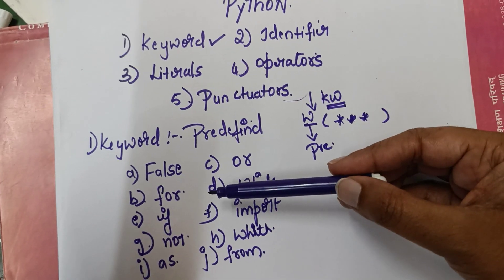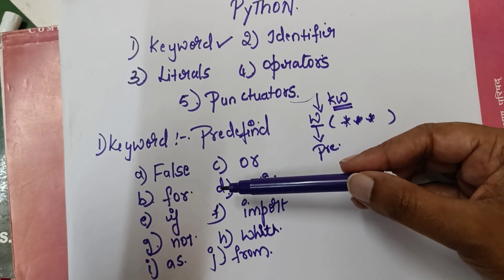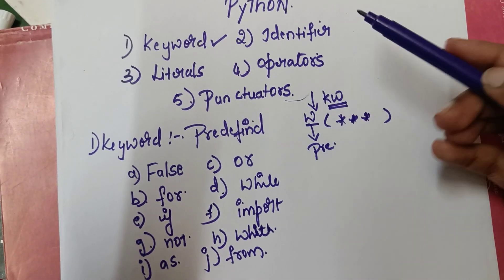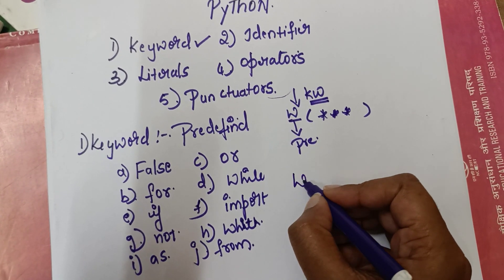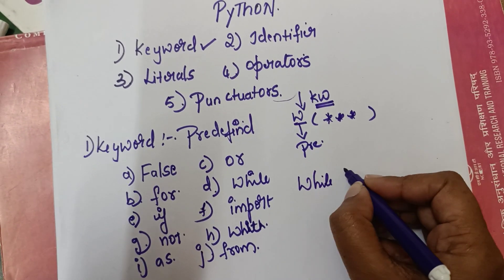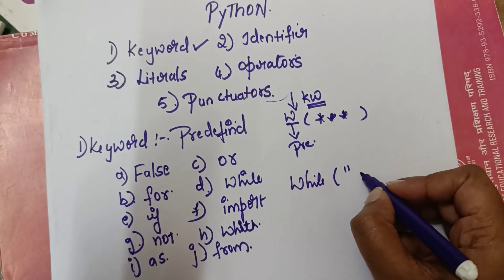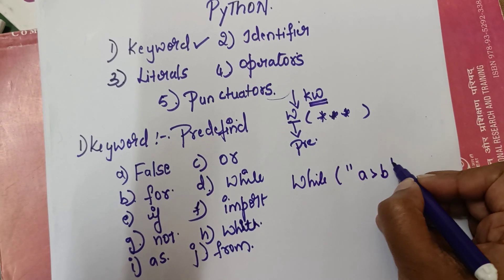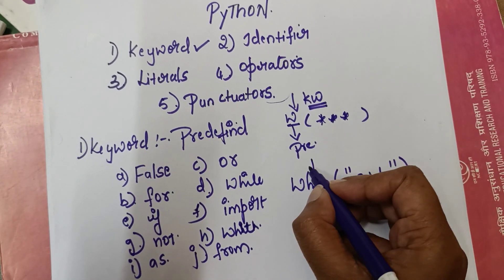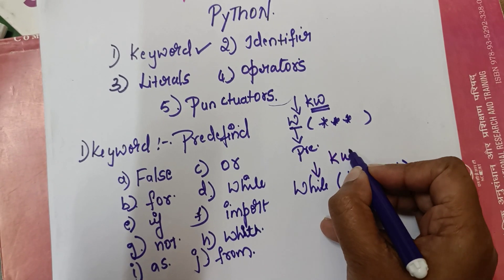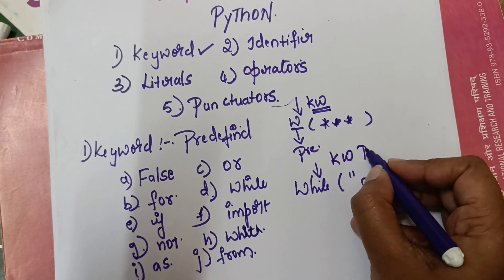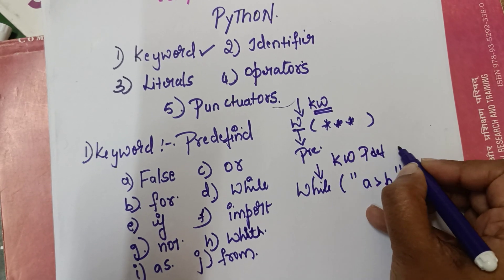Some of the keywords we are going to use in Python as predefined words. I just gave one example for you like this: if you write while, then here A is greater than B. Now, this we call a keyword or predefined word.